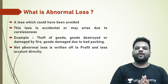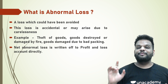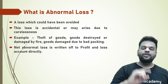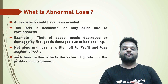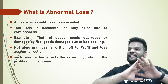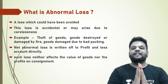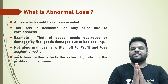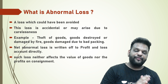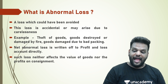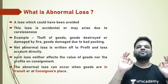Now, where are net abnormal loss and gross abnormal loss to be disclosed? Net abnormal loss will be debited to the Profit and Loss account, and the gross value of abnormal loss will be credited to the Consignment account. Such a loss neither affects my profitability nor affects the value of goods.